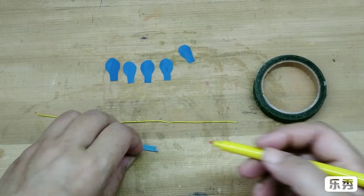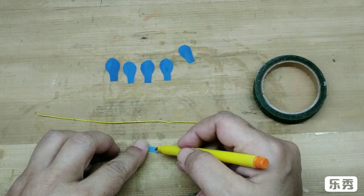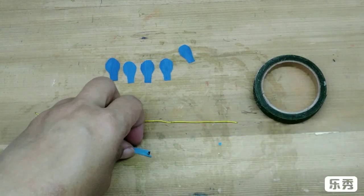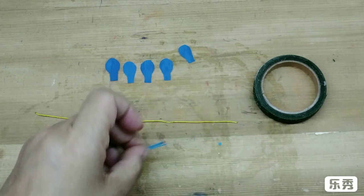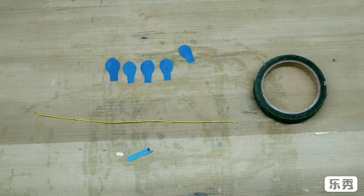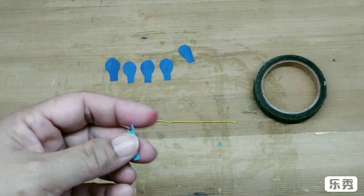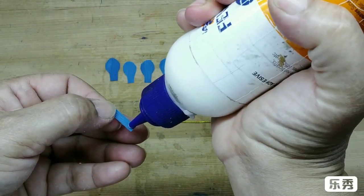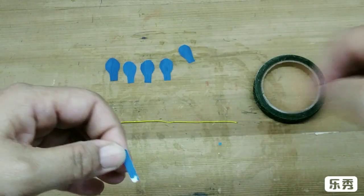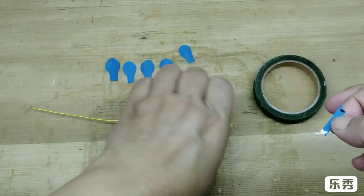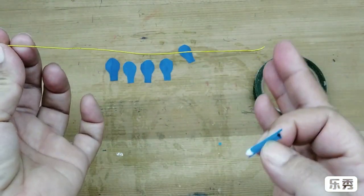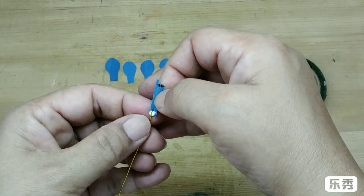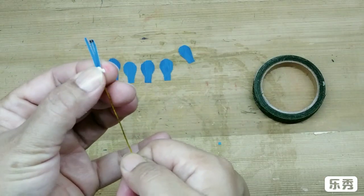Just apply some glue on the base. Take a thin wire, about five to six centimeters long, and wrap this around it.